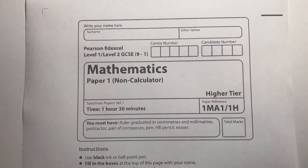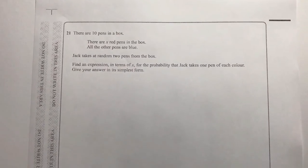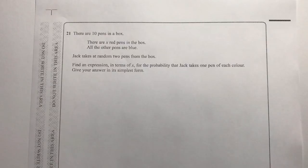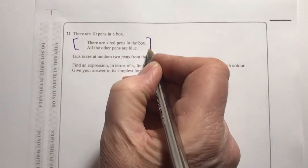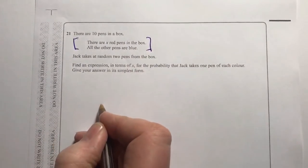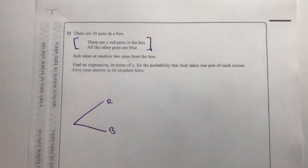We're going to start with question number 21, after finishing the previous video at question number 20. This is one of those types of questions which you've really got to work through fairly carefully. It says there are 10 pens in the box, there are x red pens in the box, and the other pens are blue. So I'm going to draw a little probability tree — I've got red and blue pens in the box.